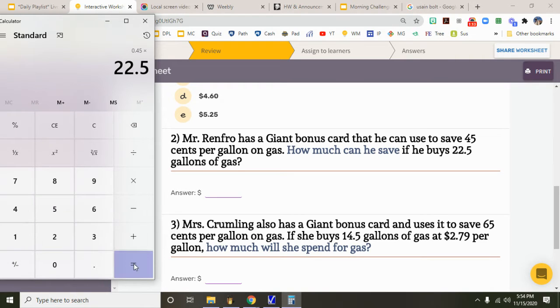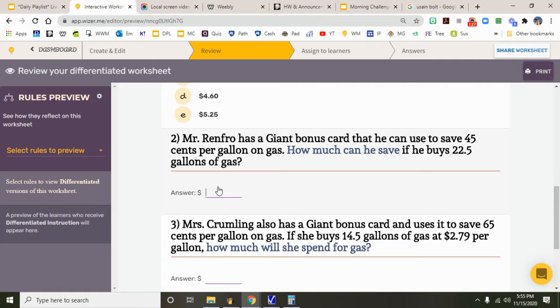When you're dealing with money, round to the hundreds place. So since this is five or higher, you can make that a three. So the answer is $10.13.